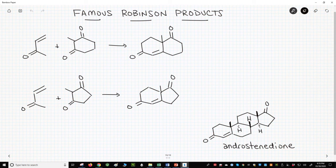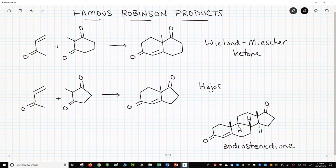The first reaction makes a product called the Wieland-Miescher ketone. The bottom reaction makes a product called the Hajos-Parrish ketone. Both of these Robinson annulations work well.